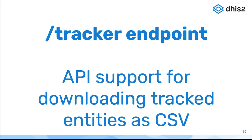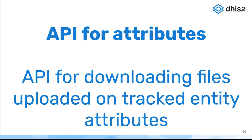We have two minor features added to the backend, and one of them is on the Tracker endpoint. It's API support for downloading tracked entries as CSV, which might be useful to download TEIs into CSV. We also have an API for downloading files that have been uploaded on tracked entity attributes — this did not exist before, and it has been implemented now.